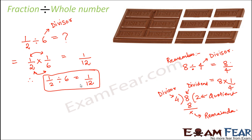In division of fractions, remember one simple thing: just take the divisor, turn it upside down — make the numerator the denominator and the denominator the numerator — and then multiply. So dividing by six is the same as multiplying by one-sixth. This brings us to the concept of the reciprocal — the relationship between six and one-sixth.